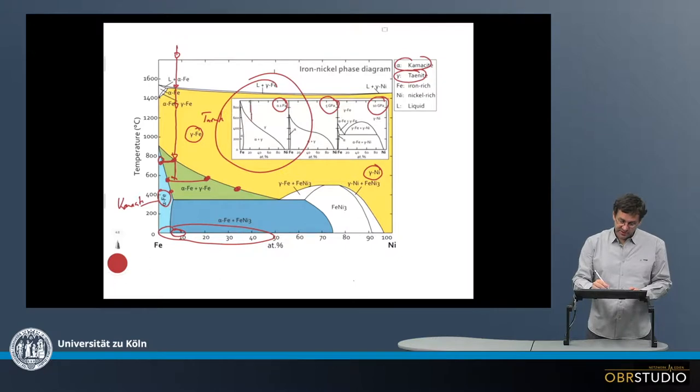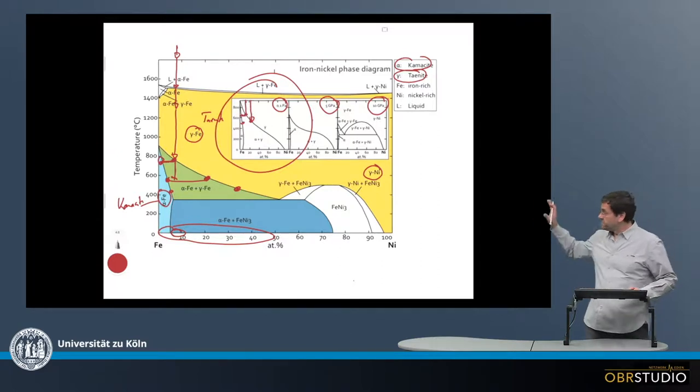As you can see here again, this is basically showing the same as I just explained. At around 600, something like degrees depending on composition, so 700 would be rather here, the decomposition starts into kamacite and taenite here, and then continues to a certain temperature.